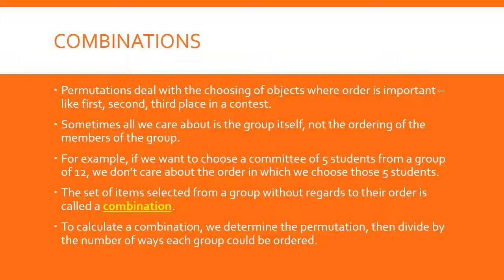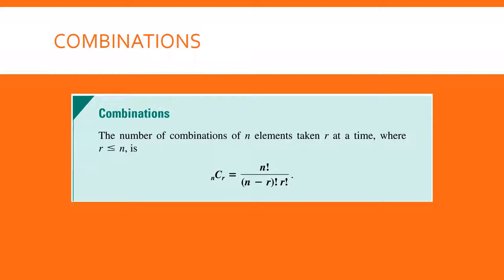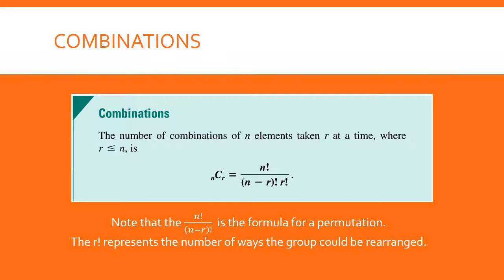To calculate a combination, we figure out the permutation but then divide by the number of ways each group could be ordered. In a permutation, you could count the same group of five people multiple times because every rearrangement is different. But in a combination, every different rearrangement of the five people is considered the same. The formula is: n factorial over (n minus r) factorial times r factorial. Your calculator has a combination key in the math/probability menu.